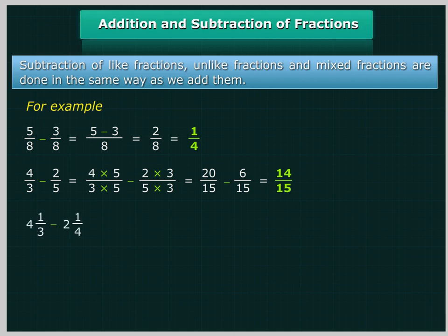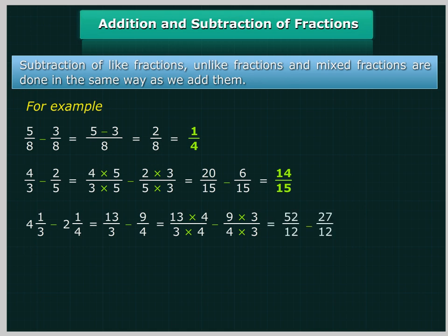For mixed fractions: 4 and 1 upon 3 minus 2 and 1 upon 4 is equal to 13 upon 3 minus 9 upon 4, which is equal to (13×4)/(3×4) minus (9×3)/(4×3), equal to 52 upon 12 minus 27 upon 12, equal to 25 upon 12, which is equal to 2 and 1 upon 12.